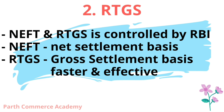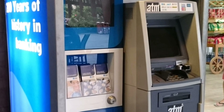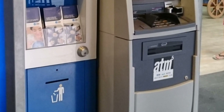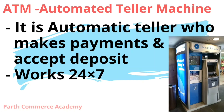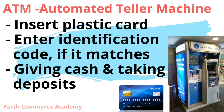RTGS is a faster and more effective mode of payment. Now, at last, let's see something about ATM. ATM stands for Automated Teller Machine. It is an automatic teller that makes payments and accepts deposits. It works 24/7. You need to insert the plastic card in the machine and enter your identification code. If your code matches, the machine will respond by giving you cash or by taking deposits.